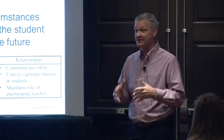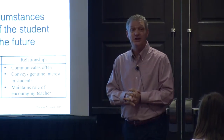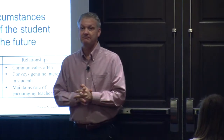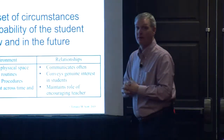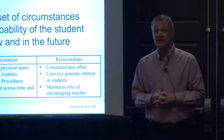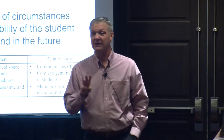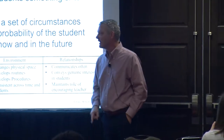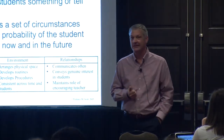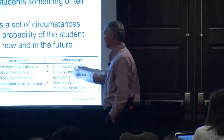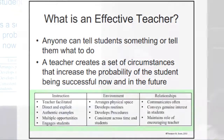Whether you're a special ed or gen ed teacher, space, routines, consistency, and procedures are huge predictors. But those aren't things people think about — they think about the relationship domain, which is just as valid, but it's only one of three domains. If you do everything exactly right in instruction and environment but have a poor relationship with kids, it won't work. But you can have a great relationship with kids and if you don't have good instruction, it's not going anywhere either. It's got to be all of the above.